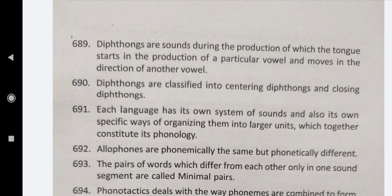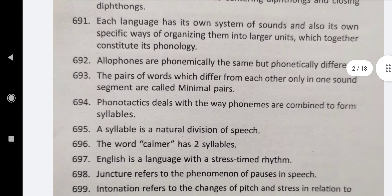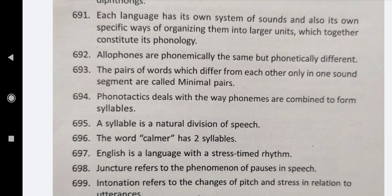Diphthongs are classified into centric diphthongs and closing diphthongs. Each language has its own system of sounds and also its own specific ways of organizing them into larger units, which together constitute its phonology. Allophones are phonetically the same but phonetically different. The pairs of words which differ from each other only in one sound segment are called minimal pairs.